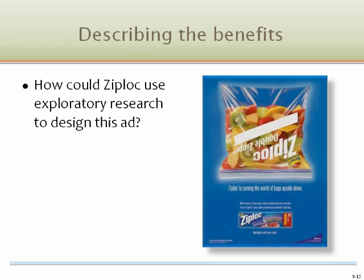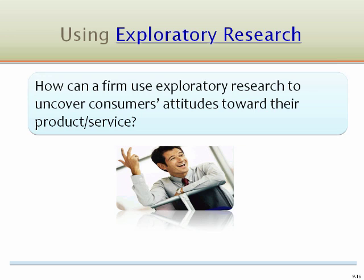Researchers might have observed how people tested the durability of bags — perhaps several turned them upside down. They may have conducted interviews about problems, and leaking was a very big issue. Finally, during a focus group, they might have had one participant mention leaking and another discuss how you would test for leaking by turning the bag upside down. Exploratory research offers firms the opportunity to narrow their questions and arrive at a better research strategy.